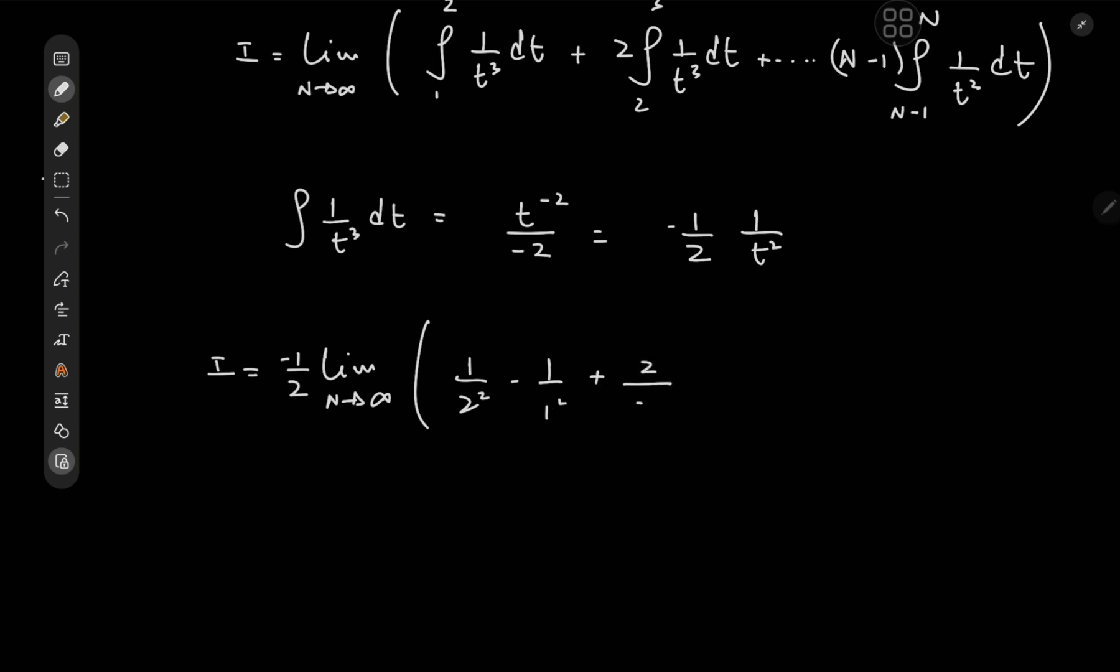Then we have 2 over 3 squared minus 2 over 2 squared. We would of course have a 3 over 4 squared minus 3 over 3 squared and so on and so forth.